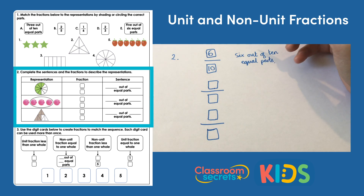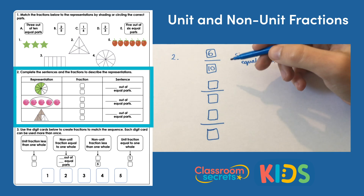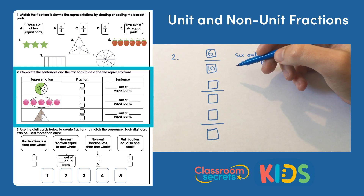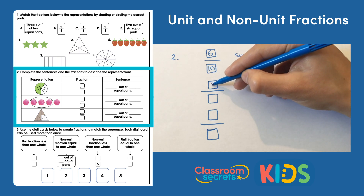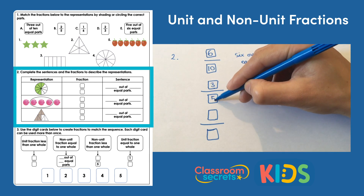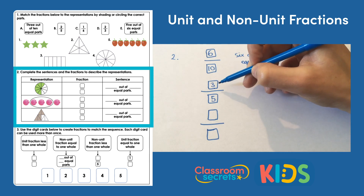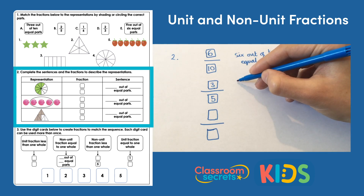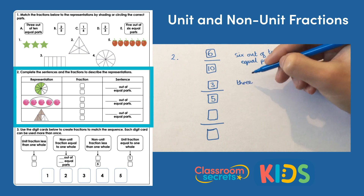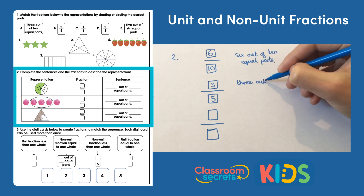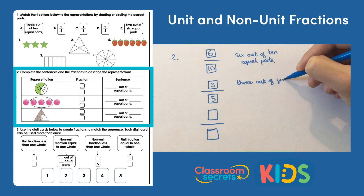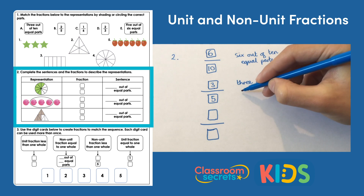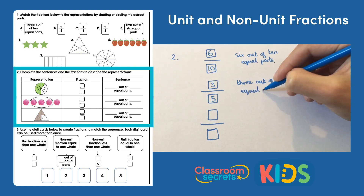For the second one, there are three shapes — I think they're marbles — three marbles circled out of five. So we're looking at three of the parts and five make up the whole. We're looking at three fifths as our fraction, written as three out of five equal parts.